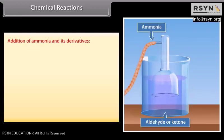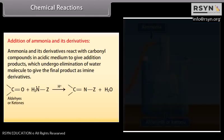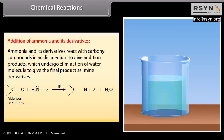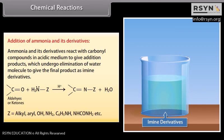Addition of ammonia and its derivatives: ammonia and its derivatives react with carbonyl compounds in acidic medium to give addition products which undergo elimination of a water molecule to give the final product as imine derivatives. Z can be alkyl, aryl, OH, NH2, C6H5NH, NHCONH2, etc.